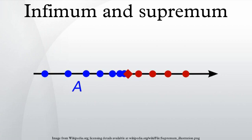If the supremum of a subset S exists, it is unique. If S contains a greatest element, then that element is the supremum. Otherwise, the supremum does not belong to S. Likewise, if the infimum exists, it is unique. If S contains a least element, then that element is the infimum. Otherwise, the infimum does not belong to S.